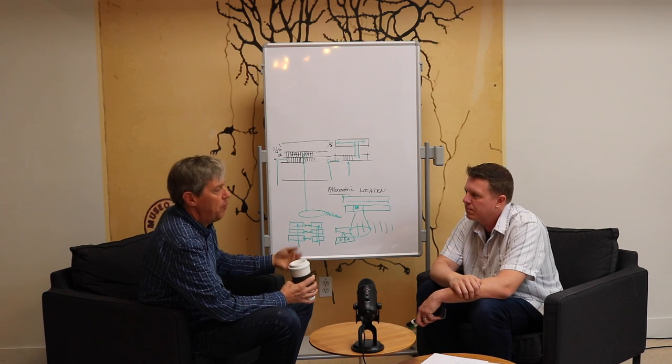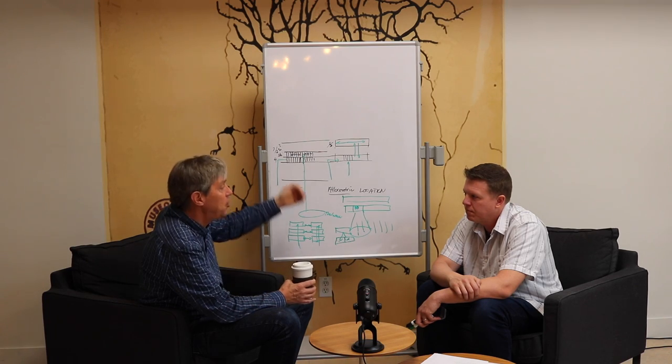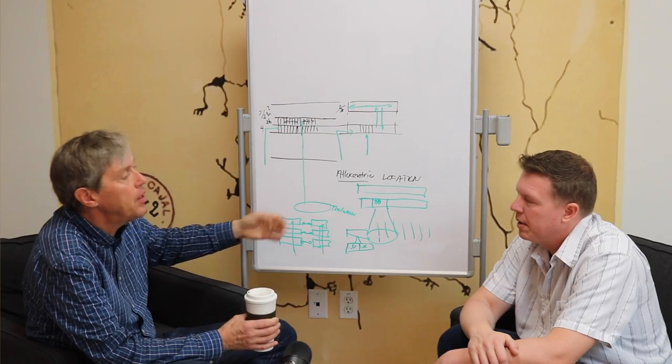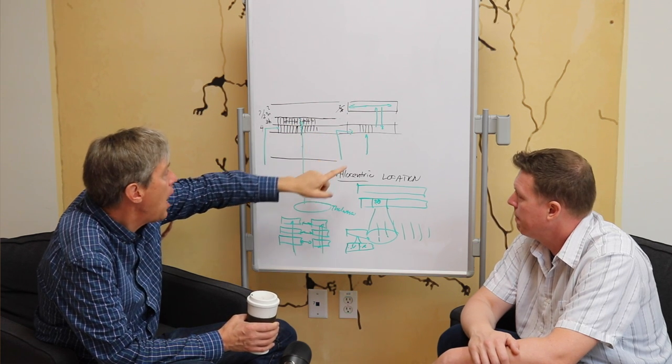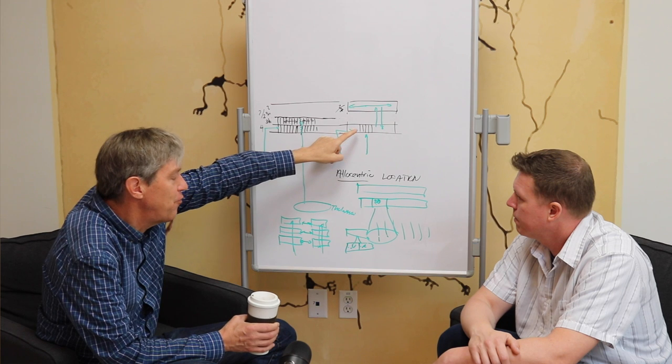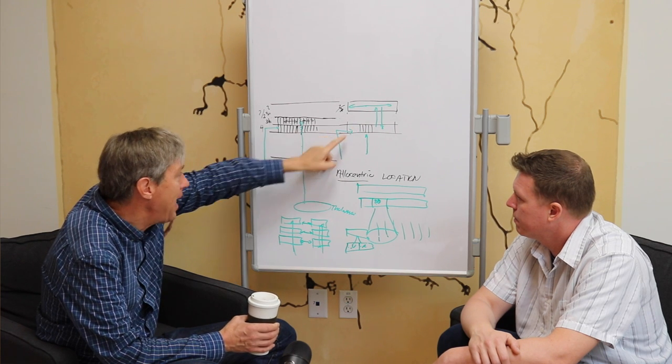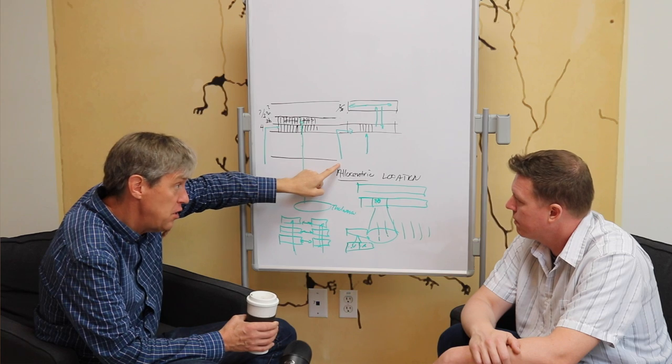Feedback exists everywhere in the cortex. And so when people think about feedback, they say, oh, it's feedback in the hierarchy. True. That's there. But in this case, we have feedback from the output layer to the input layer. I talked a little bit about that. I've talked about this location input coming in. I didn't mention that there's a feedback from layer 4, the input layer, back into the cells that are providing the location information.